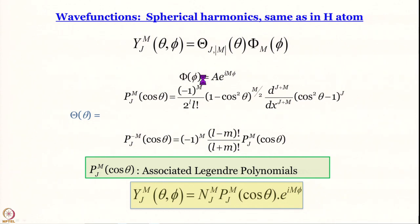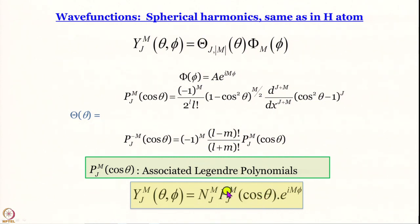The theta-dependent part is essentially a constant multiplied by an associated Legendre polynomial in cos θ. So the theta-dependent part is a polynomial, and the phi-dependent part is an imaginary exponential factor.